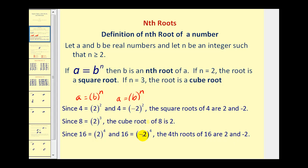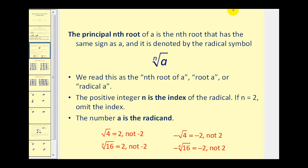What you might notice right away is some numbers have one nth root, and others have two nth roots. It really depends on whether n is even or odd. If a number does have two nth roots, that can be an issue, so we do have to have a way to distinguish between which nth root we want.